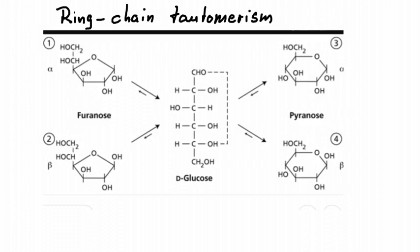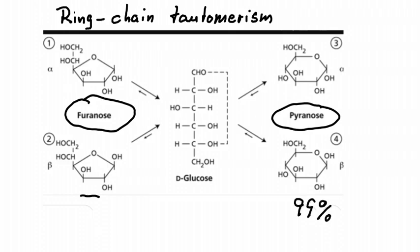And what we form then is either a five ring system, like this one, which is called a furanose, or a six ring system, a pyranose. And glucose usually in solution is about 99% in the pyranose formation. It's about roughly 0.25% in the chain form and the remaining little bit 0.75% in the furanose position.